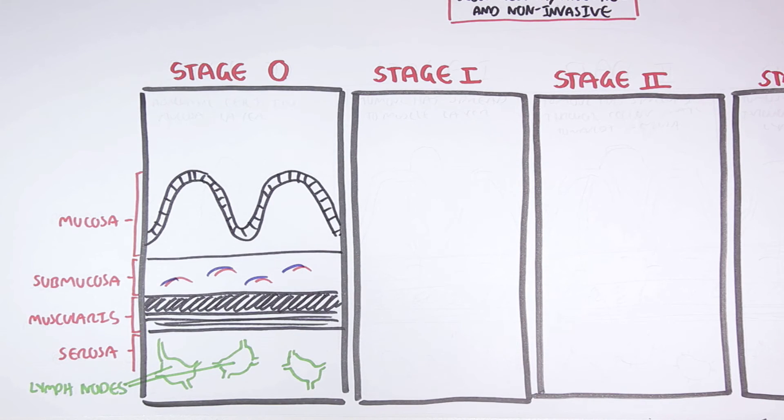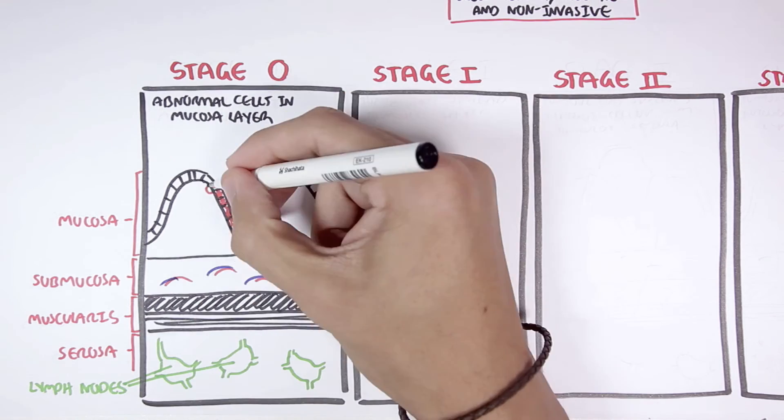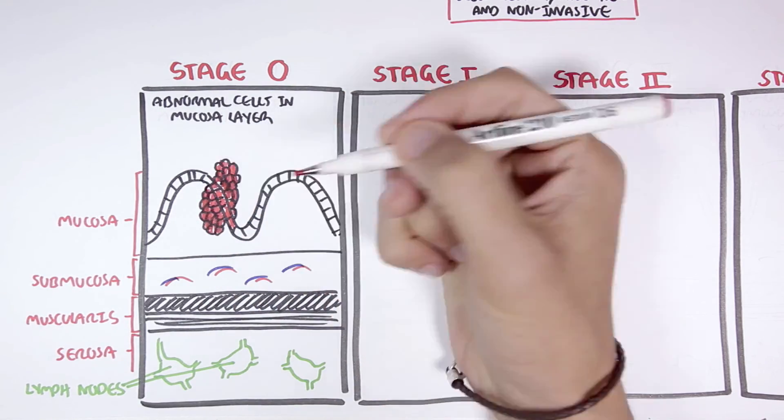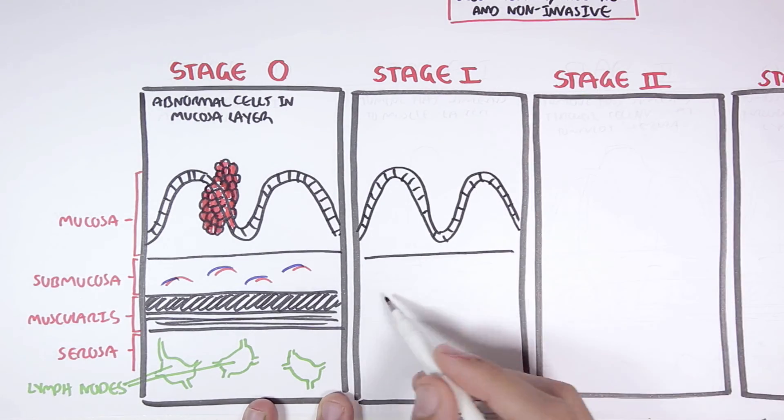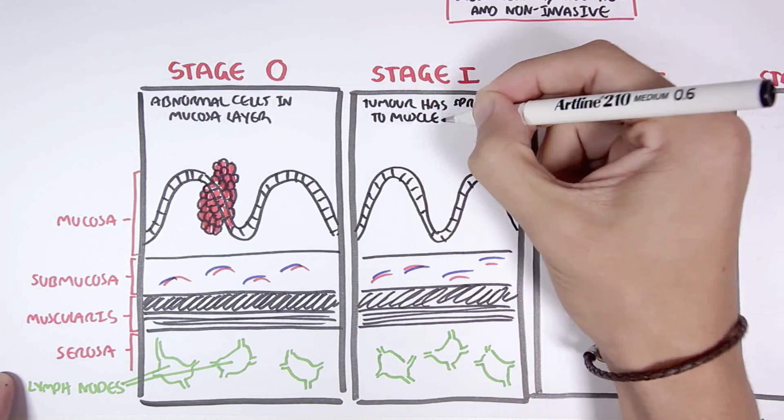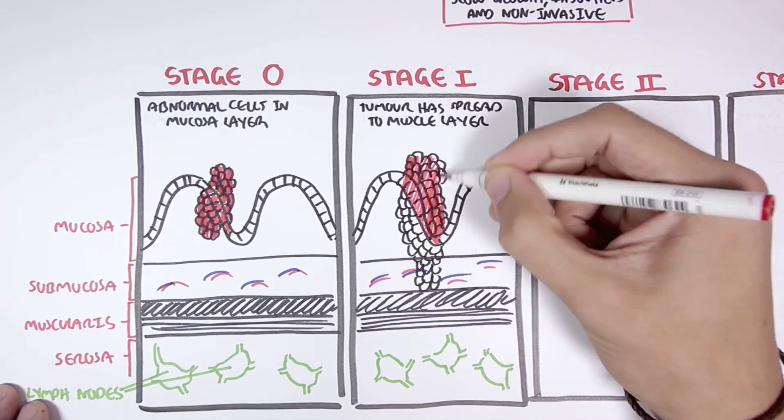Stage 0 is basically when we have abnormal cells in the mucosa layer that will keep dividing, forming a polyp. The polyp is usually benign. Stage 1 is where the tumor has spread to the muscle layer, and things may be getting serious.